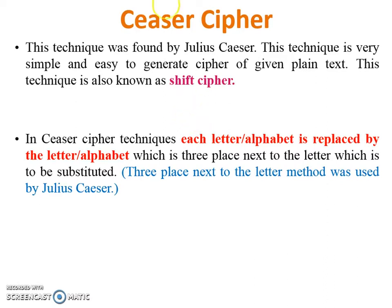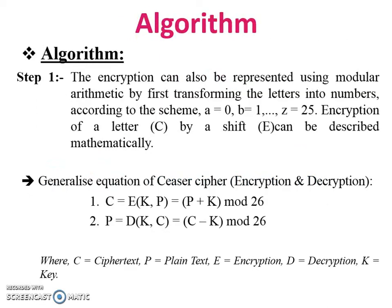This technique was found by Julius Caesar. It is very simple and easy to generate ciphertext from given plaintext. This technique is also known as shift cipher. In Caesar cipher, each letter or alphabet is replaced by another letter or alphabet, because Caesar cipher is a substitution cipher.